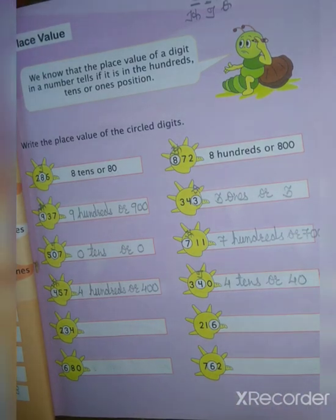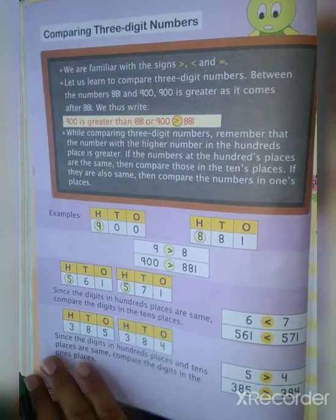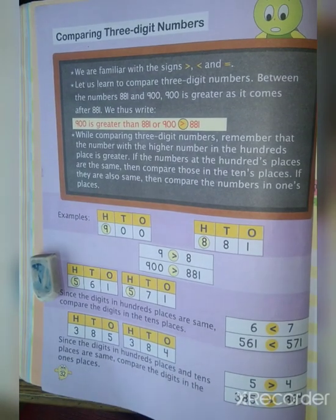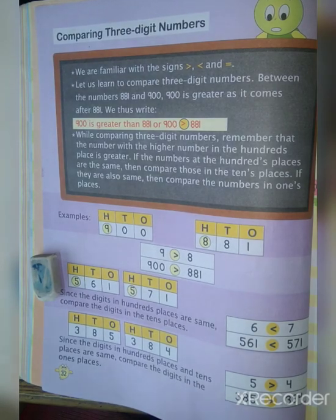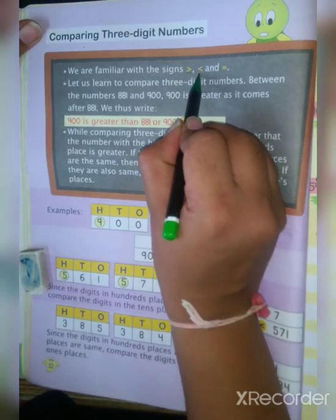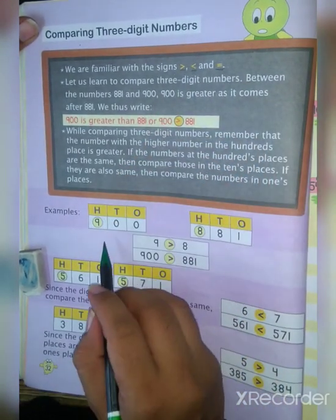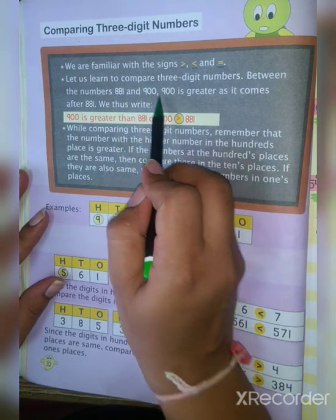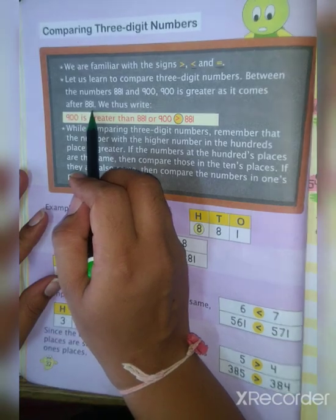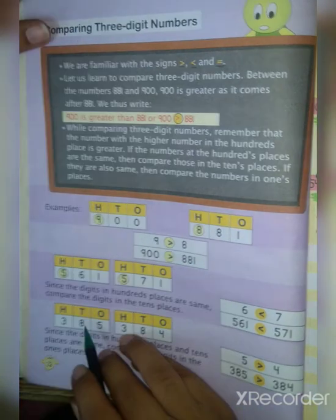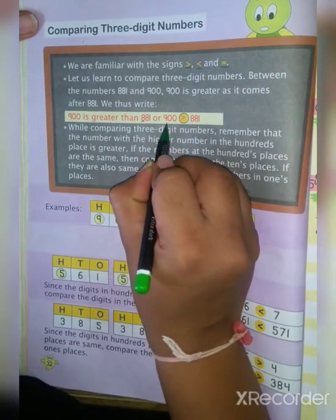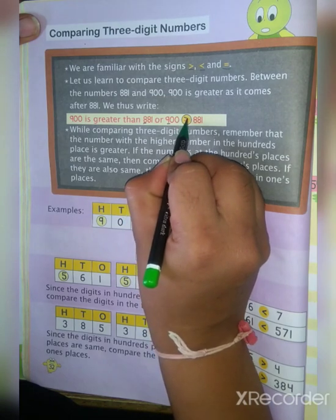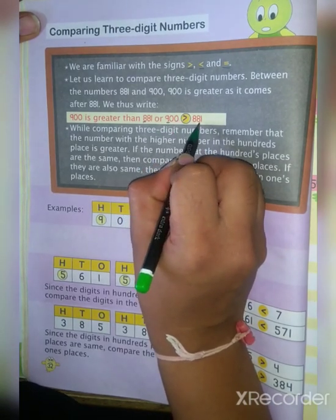Now our next topic is comparing 3-digit numbers. You have to compare the digits — hundreds, tens, and ones. First be familiar with the signs: greater than, less than, and equal to. Let us compare 881 and 900. 9 is in hundreds and 8 is in hundreds. 9 is bigger, so 900 is greater than 881.